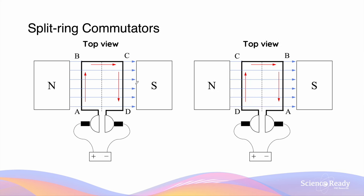This is another diagrammatic comparison. In the beginning, in both diagrams, current is flowing from the positive terminal to the negative terminal — going through A, B, C, D in the first diagram, and D, C, B, A in the second diagram.